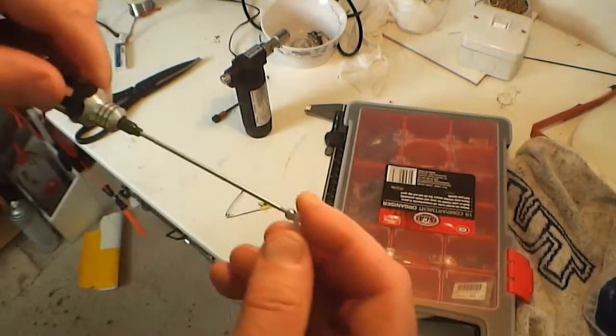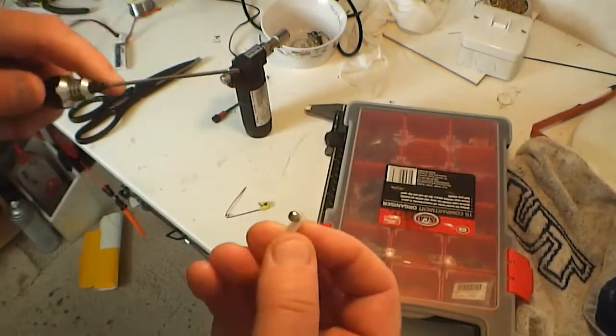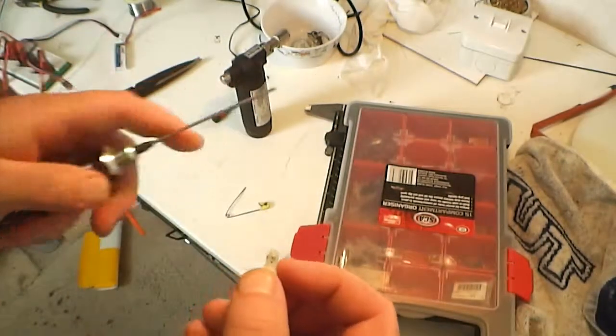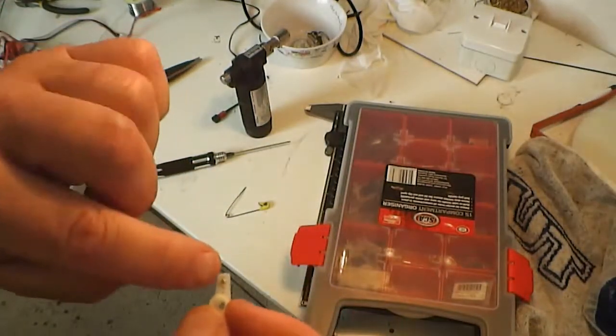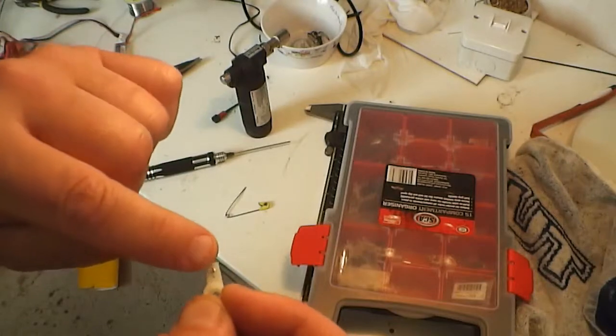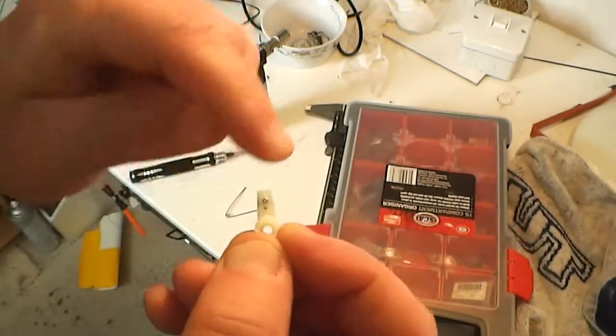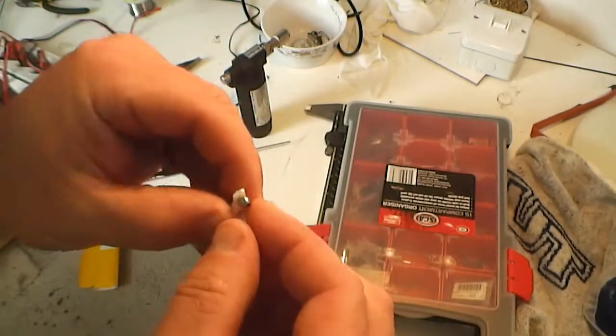Once you've got it screwed all the way home, get your super glue—CA glue—and put a couple of drops on the other side where the thread comes through. That's your ball joint in.